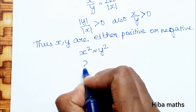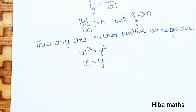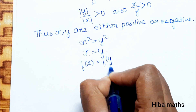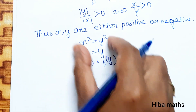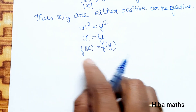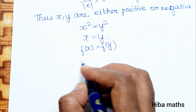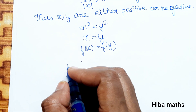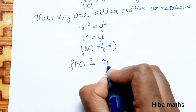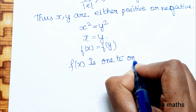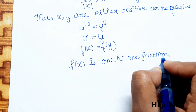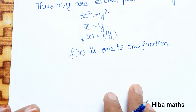From x² = y², we get x = y. Therefore f(x) = f(y) implies x = y. This satisfies the 1 to 1 condition. Therefore f(x) is a one-to-one function, and the first condition is satisfied.